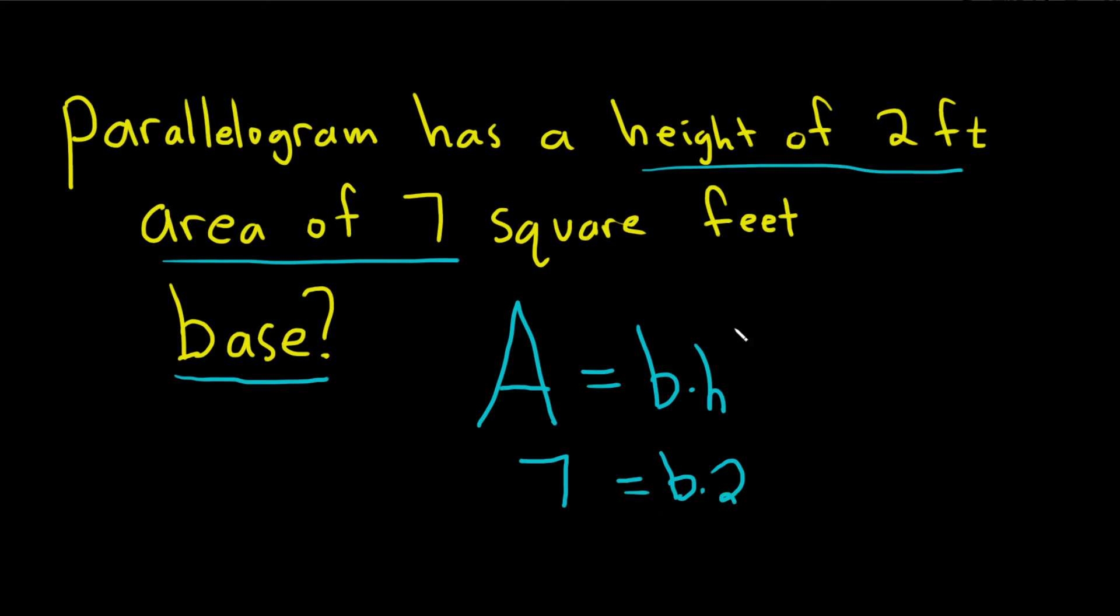B is being multiplied by 2, so to undo the multiplication, we use division. So I'll draw a line and put the division sign like this and do it to both sides. So B is 7 over 2.